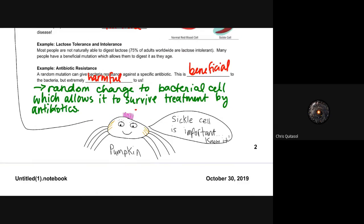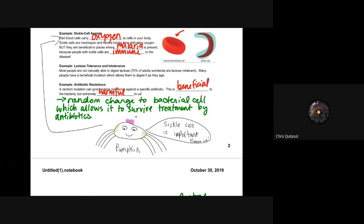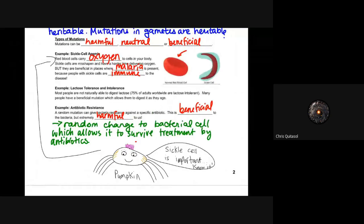And then lastly, antibiotic resistance is a form of mutation that can give bacteria resistance against specific antibiotics. We looked about this in our previous unit, how certain bacteria strains can be made to be antibiotic resistant. It's a beneficial genetic mutation to them, but extremely harmful to us. This random change in bacteria cell allows them to survive treatment by antibiotics. Like I said, this is an important component, these types of mutations. I even drew a spider that says sickle cell is important to know. So please know it. That's what Pumpkin the pink-haired spider says.